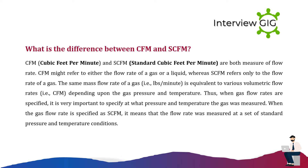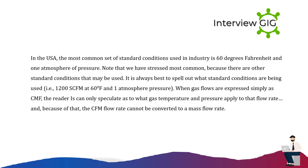What is the difference between CFM and SCFM? CFM (cubic feet per minute) and SCFM (standard cubic feet per minute) are both measures of flow rate. CFM may refer to either the flow rate of a gas or a liquid, whereas SCFM refers only to the flow rate of a gas. The same mass flow rate of a gas (pounds per minute) is equivalent to various volumetric flow rates (CFM) depending on gas pressure and temperature. When gas flow rate is specified as SCFM, it means the flow was measured at standard pressure and temperature conditions — in the USA most commonly 60°F and one atmosphere. It is always best to specify the standard conditions being used, e.g., 1200 SCFM at 60°F and one atmosphere. When flows are expressed simply as CFM, the reader can only speculate about temperature and pressure, so the flow rate cannot be converted to a mass flow rate.